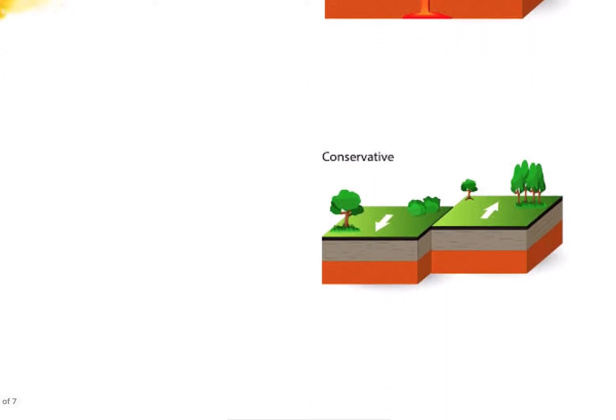Last but not least, we move on to our conservative plate margin. At our conservative plate margin, there's really two ways the plates can move. They can either slide sideways past each other in opposite directions, or sometimes our plates are going in the same direction, but they're just moving at two different speeds. When this happens, lots of friction is generated, and that's what causes us to get our earthquakes.